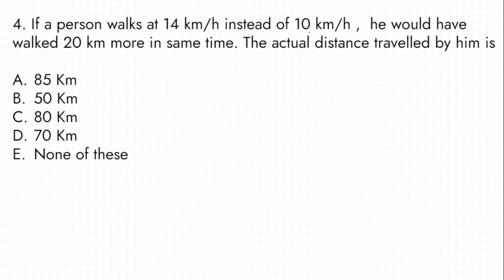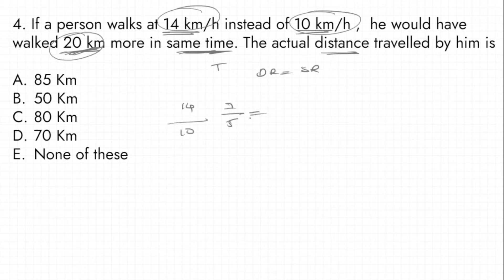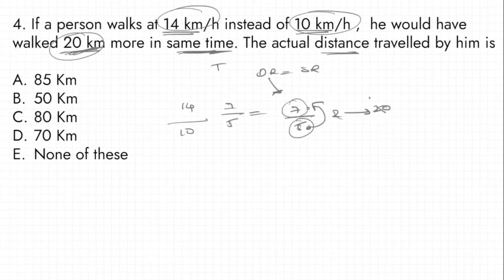Problem: If a person walks at 14 km/h instead of 10 km/h, he would have walked 20 km more in the same time. Find the actual distance traveled by him. Since time is the same, the distance ratio equals the speed ratio. Speed ratio of 14 to 10 gives us 7 by 5.